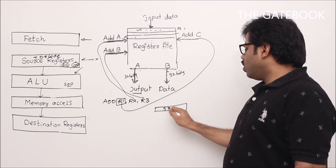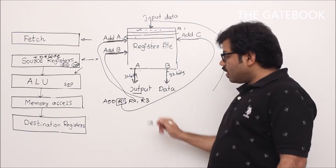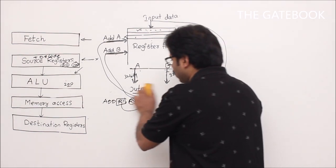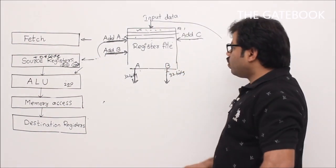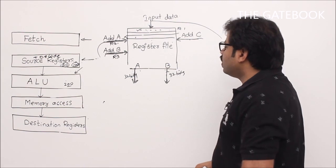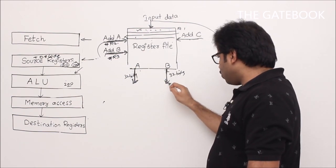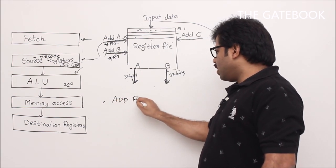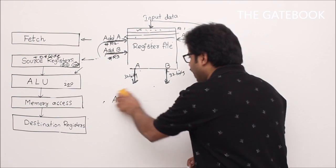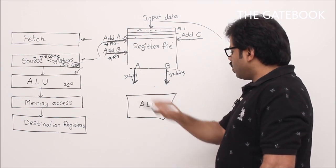Through the write data line, we provide the result. We store the result after adding R2's value and R3's value. If you specify R2's address at port A and R3's address at port B, the data of R2 and R3 comes out. Then take an ALU, connect the two outputs as inputs to the ALU. Assume the ALU is designed to take 32-bit inputs and add them — using the adder circuit we already covered.